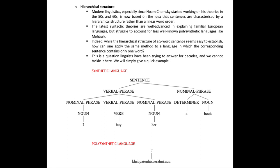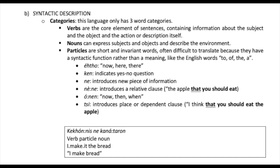Modern linguistics, especially since Noam Chomsky started working on his theories in the fifties and sixties, is based on the idea that sentences have a hierarchical structure. However, applying this method to a language where a five-word sentence corresponds to a single word is a question linguists have been trying to answer for decades. There are only three word categories in Mohawk: verbs (the core element, containing subject, object, and action), nouns (expressing subjects, objects, and environment), and particles — short invariant words with syntactic function, like English 'to,' 'of,' 'the,' and 'a.'